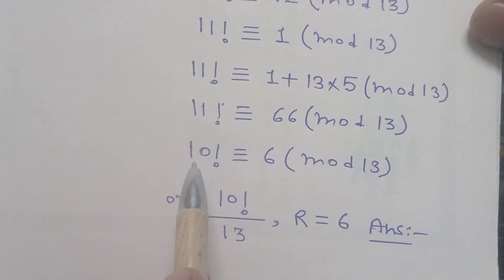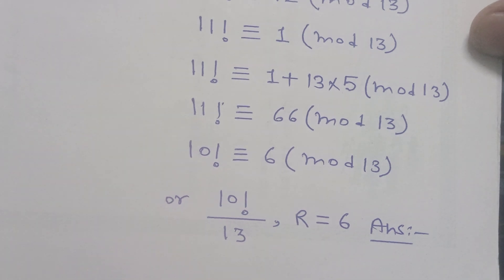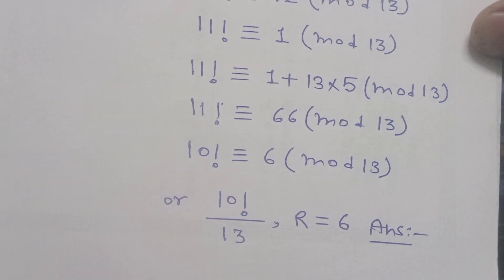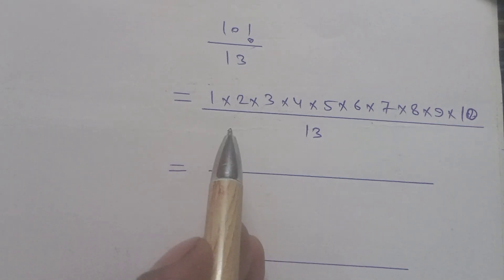So we will get 10! is equal to 6. Therefore, 10! divided by 13, the remainder will be 6. This is the answer by Wilson's theorem.